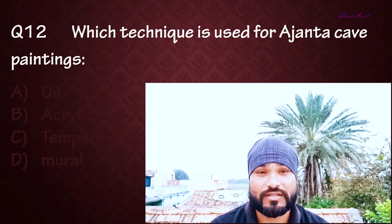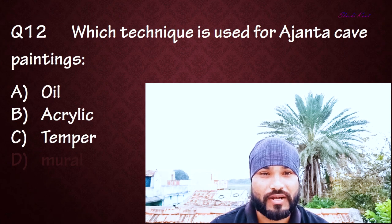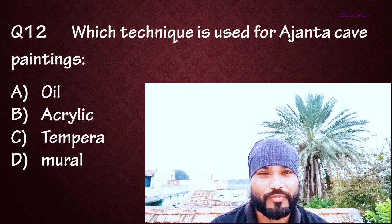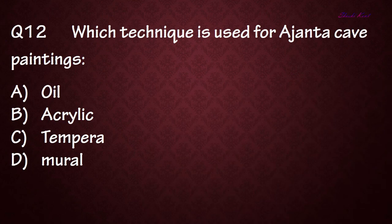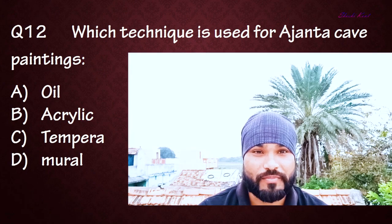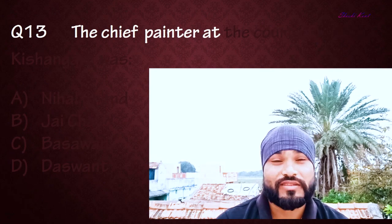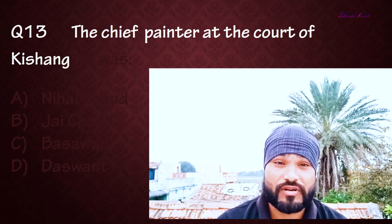Question number twelve: Which technique is used for Ajanta cave paintings? Option A: Oil, Option B: Acrylic, Option C: Tempera, Option D: Mural. The right answer is C: Tempera.